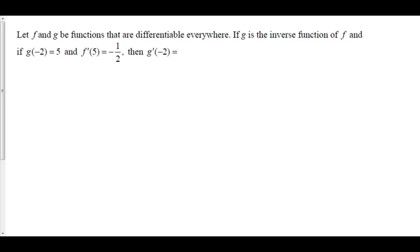Let f and g be functions that are differentiable everywhere. If g is the inverse function of f, and if g of negative 2 is equal to 5, and f prime of 5 is equal to negative 1 half, then g prime of negative 2 is equal to what?